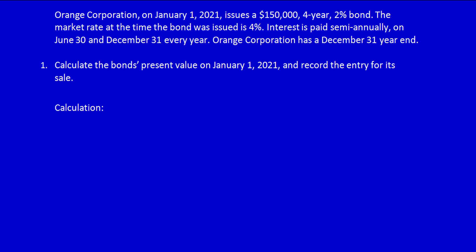Let's read the question first. Orange Corporation on January 1st, 2021 issues a $150,000 four-year two percent bond. The $150,000 is the face value of the bond — it's the amount that the bond purchaser is going to receive in four years' time. It's a four-year bond, meaning the bond purchaser purchases the bond today and in four years' time expects to be paid back. The 2% is the coupon rate — the amount of cash the purchaser will receive semi-annually.